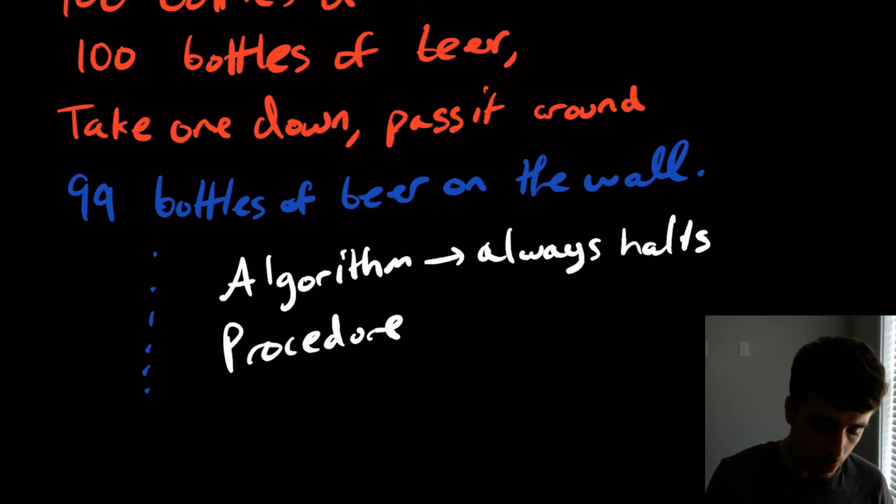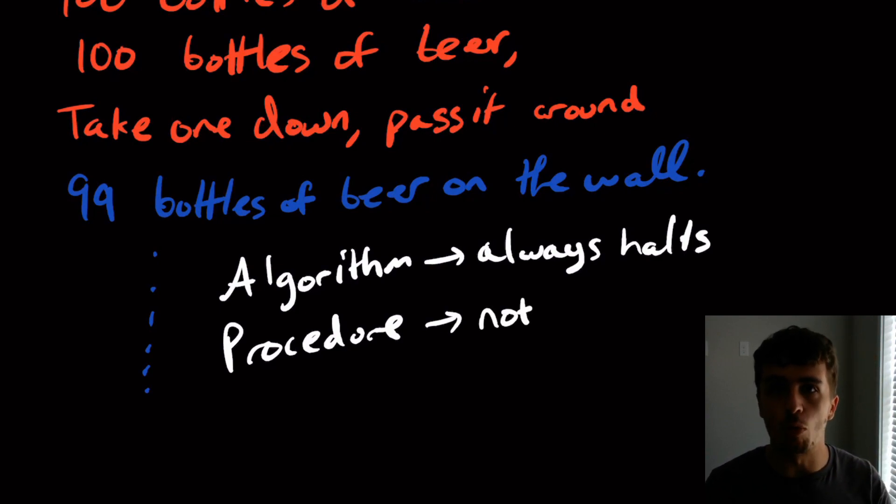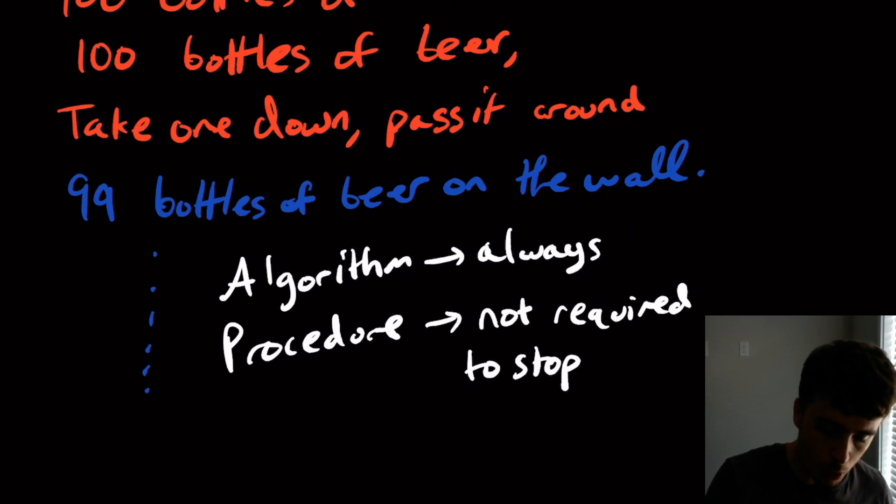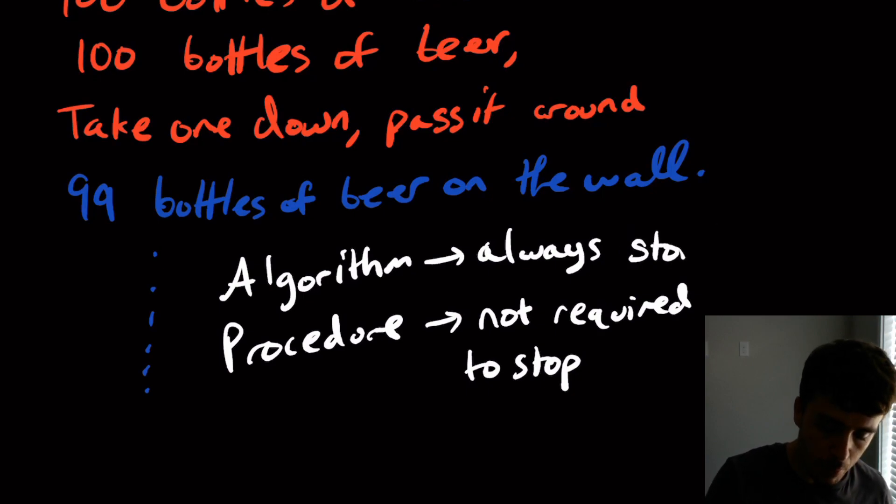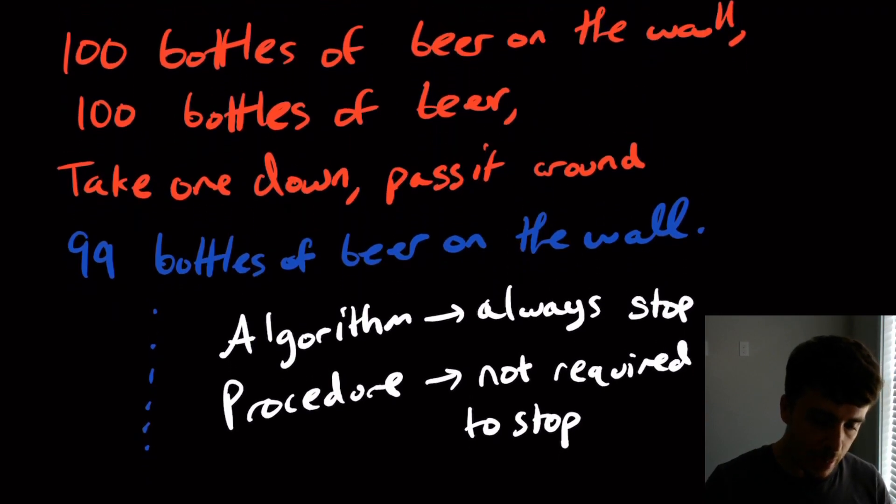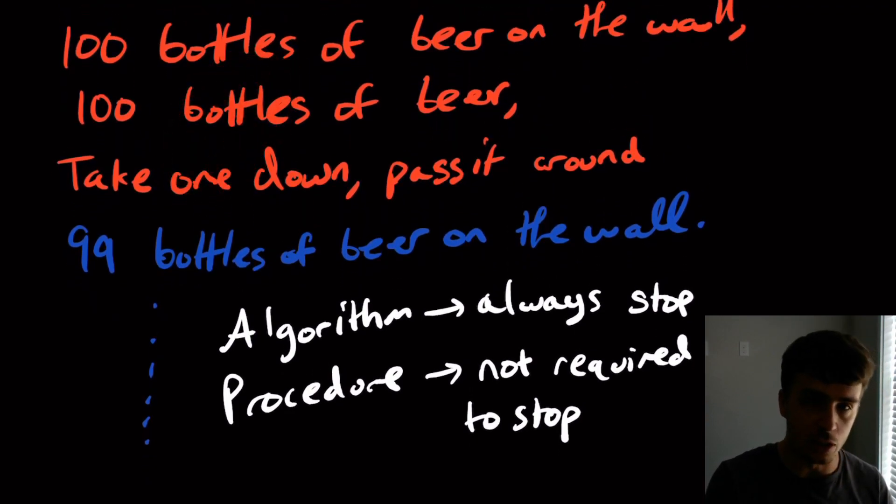We would call these a procedure. So a procedure here is the same idea, exactly the same, except we're not required to halt. Actually, I should say stop here. Stop is a more intuitive word, but it means the same thing. So the algorithm will guarantee to stop. A procedure doesn't guarantee to stop. But in both cases, it's an unambiguous set of instructions.